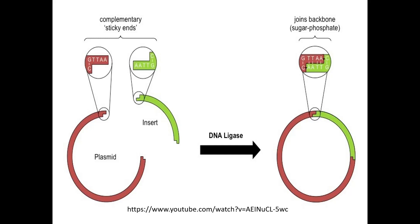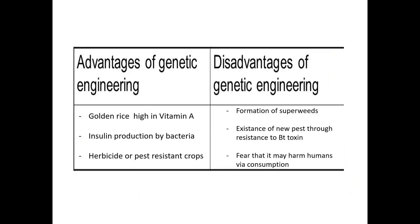Advantages of genetic engineering include: golden rice is high in vitamin A, insulin production by bacteria, and herbicide or pest-resistant crops. Disadvantages include: formation of superweeds, existence of new resistance to Bt toxin, and fear that it may harm humans via consumption.